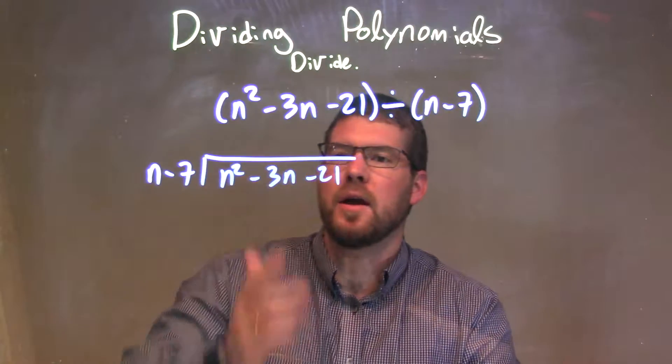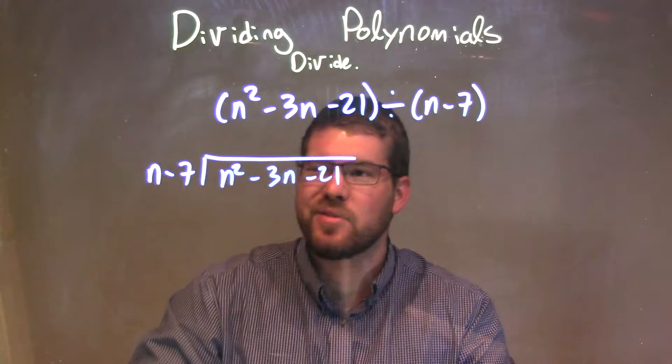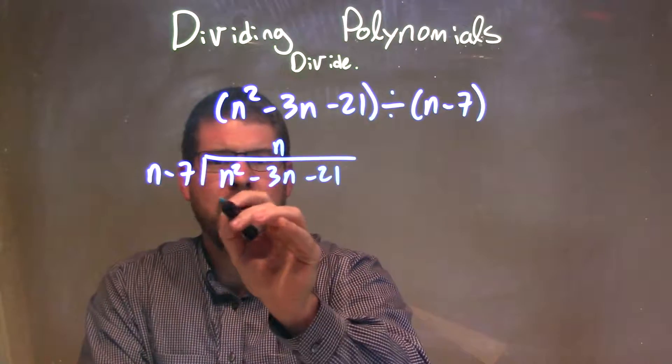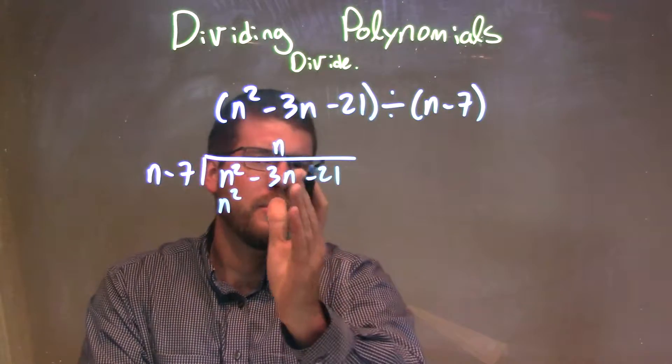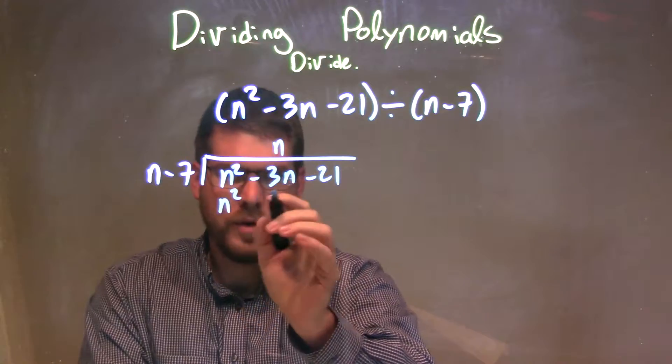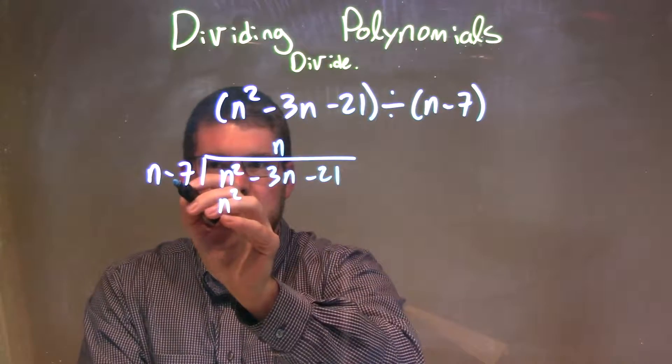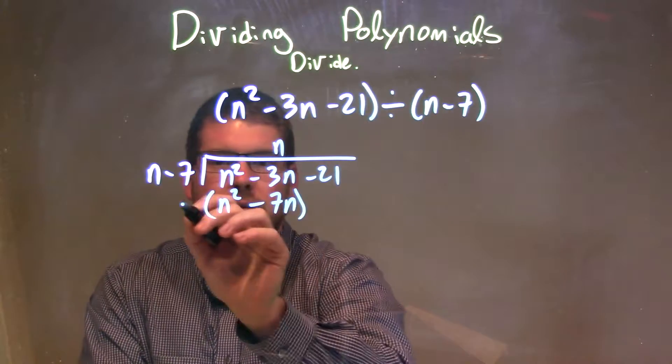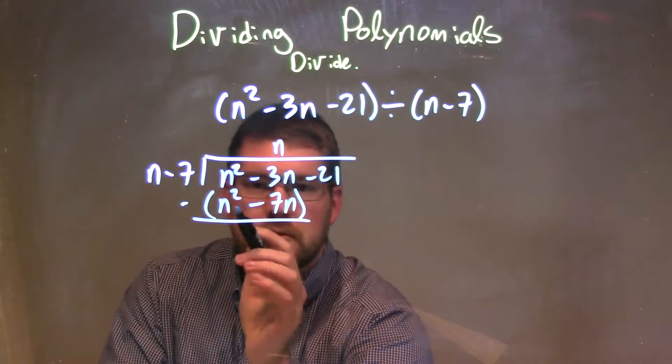So now we're going to say, okay, what times n gives me n squared? Simple, that's just an n. So n right there, n times n gives me n squared, and I put n at a place value over my 3n, or minus 3n, and n times the minus 7 is the minus 7n, and now we're going to subtract these two, put parentheses around it, making sure we subtract both parts.